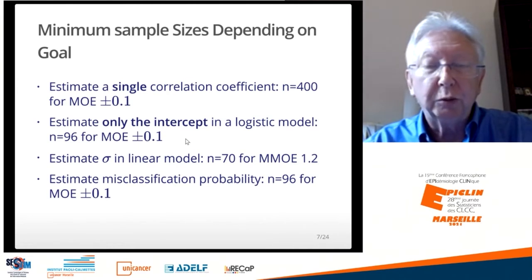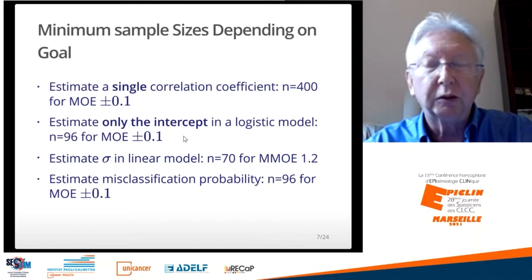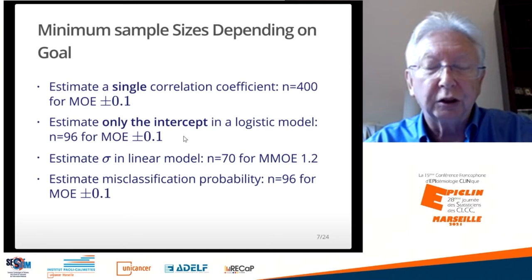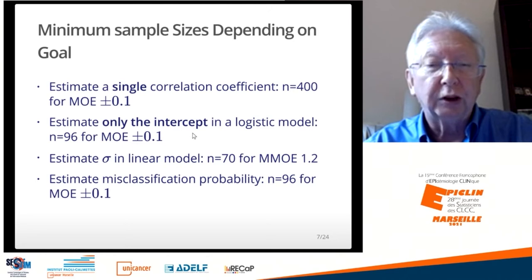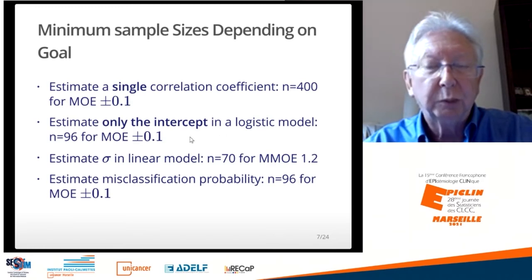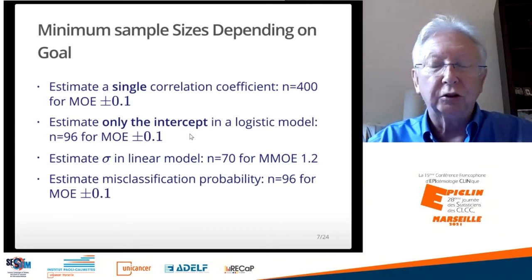We see papers coming out using machine learning — one that came out a few years ago had about 46 patients, about half with cancer, and used 2,000 protein expressions to predict cancer outcome. The number of predictors was 2,000 and the total sample size was 47. If you cannot estimate the intercept in a logistic model with 47 patients, you're not going to be able to estimate the effect of 2,000 proteins. It's just not going to work.